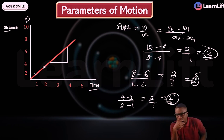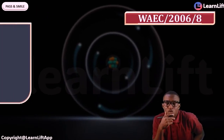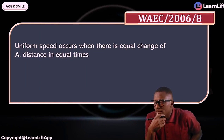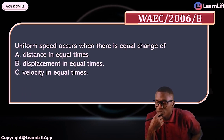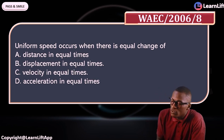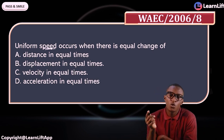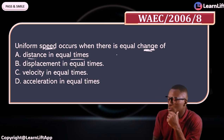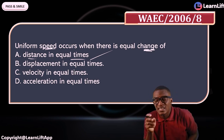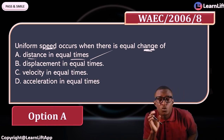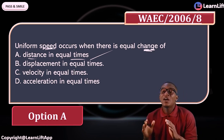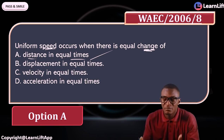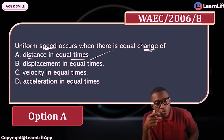Past question: Uniform speed occurs when there is equal change in — option A: distance in equal time; B: displacement in equal time; C: velocity in equal time; D: acceleration in equal time. The answer is option A — equal change in distance in equal time.